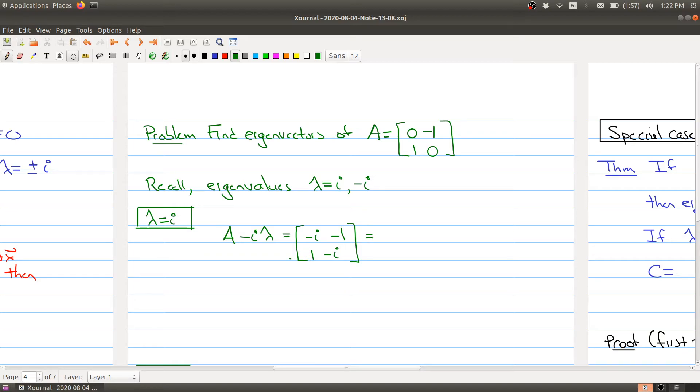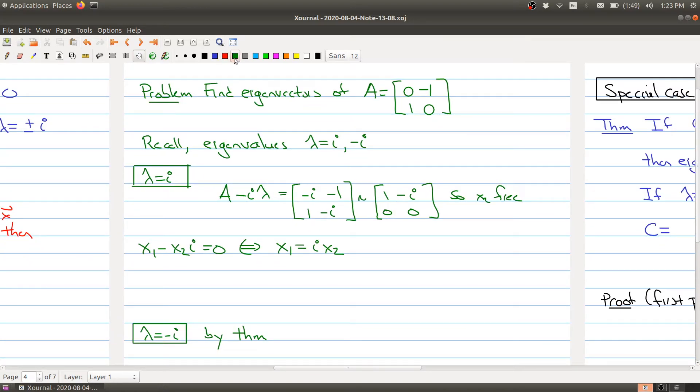What I'm going to notice is if I multiply the bottom row by negative i, then I add it to the top row, I'm going to get zero. So this is row equivalent to [1, -i; 0, 0]. This tells me x2 is free, and it also tells me that x1 minus x2i equals zero, which is the same thing as saying that x1 equals ix2.